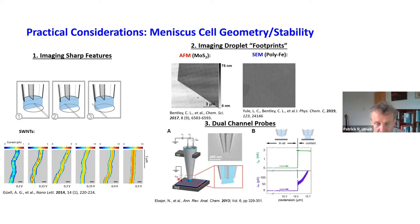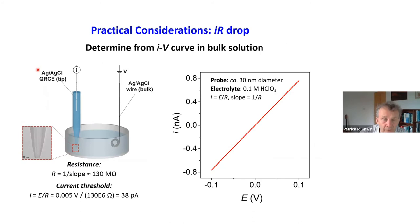The conductance currents between the two quasi-reference counter electrodes with an applied bias also tell us about the meniscus geometry and stability. There are various ways we can prove that this meniscus is stable and characterize its size.